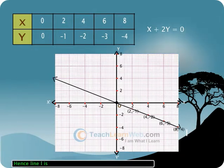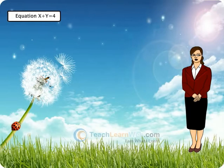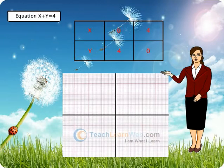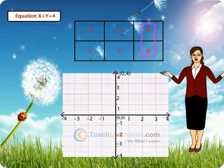Hence, line L is the graphical representation of x plus 2y equals to 0. Similarly, you can obtain the graph for the equation x plus y equals to 4.